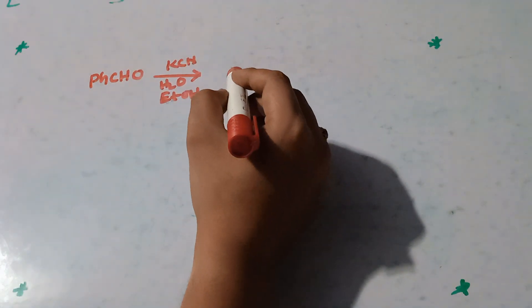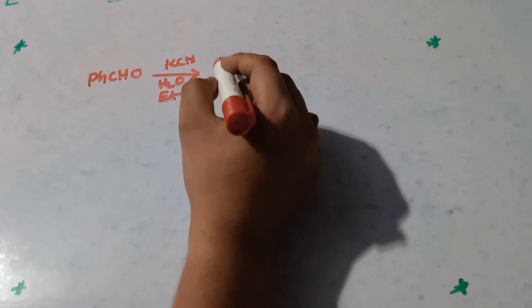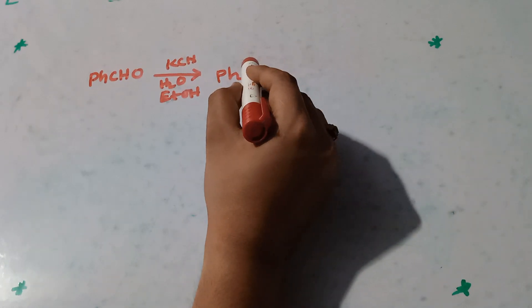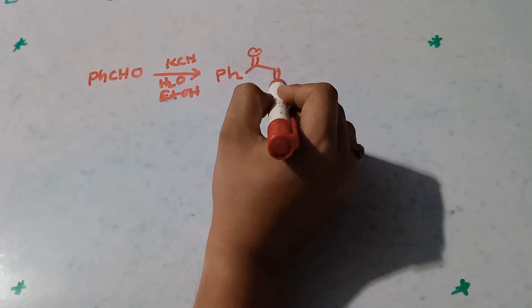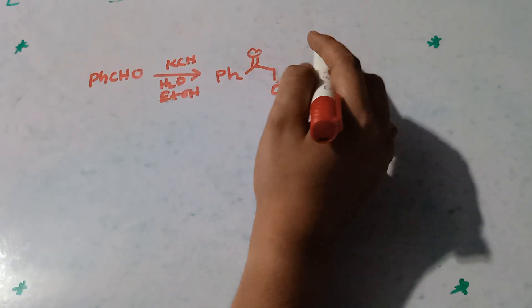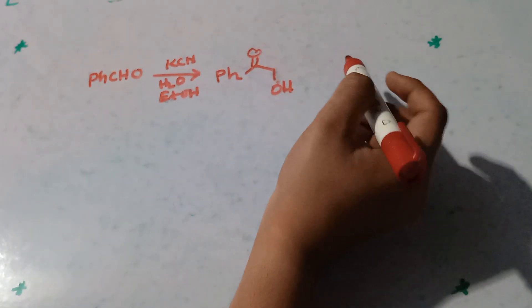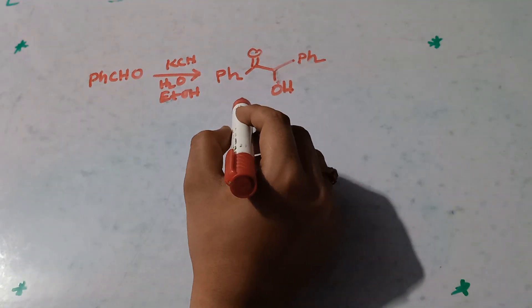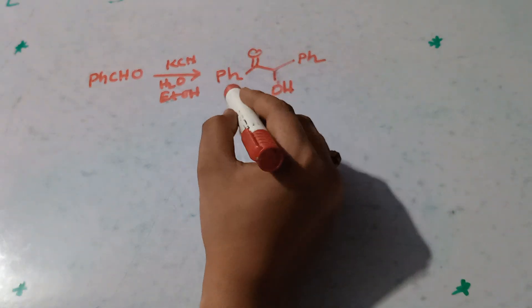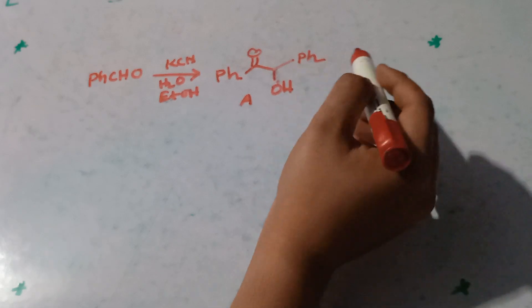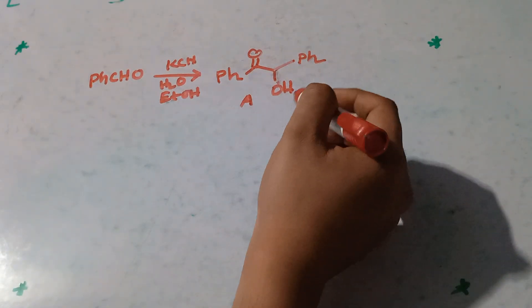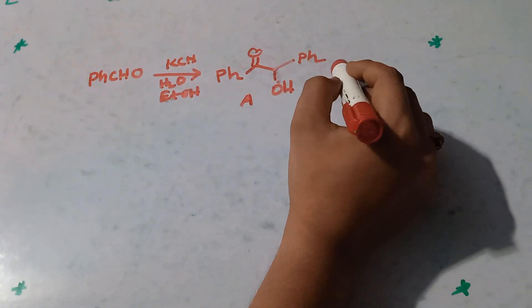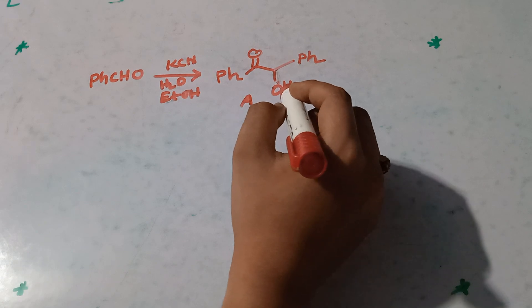Benzoin condensation gives the product benzoin: Ph-C(=O)-CH(OH)-Ph. So this is compound A. The name of this compound is benzoin, and this type of reaction is called benzoin condensation or benzoin rearrangement. I hope you have understood the mechanism with your self-study.